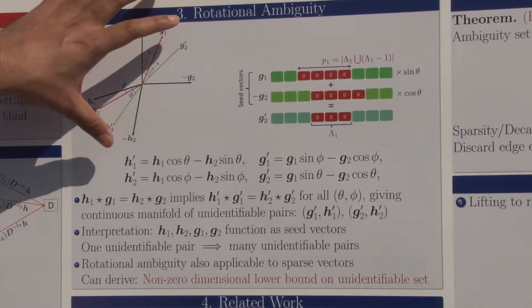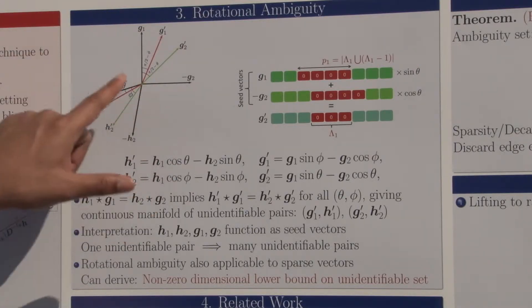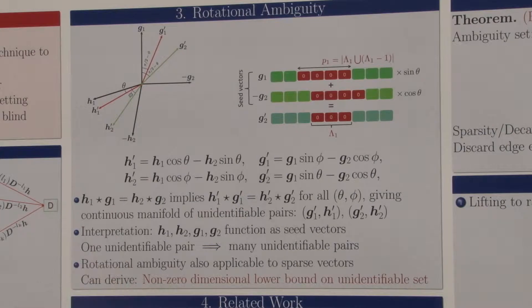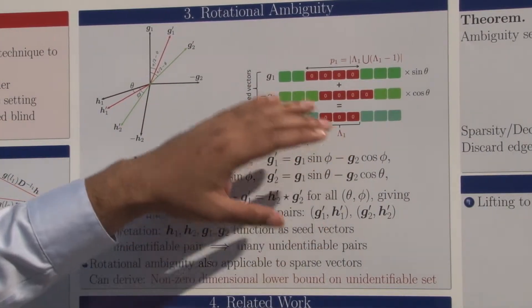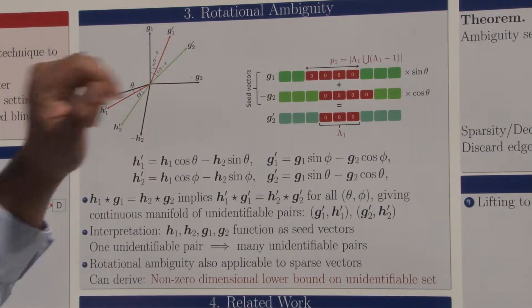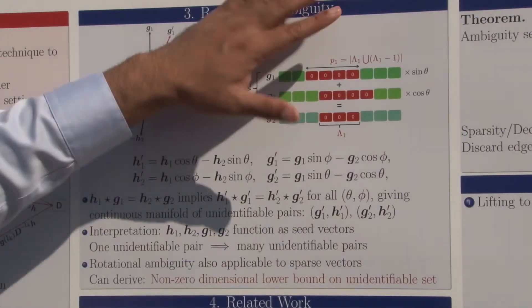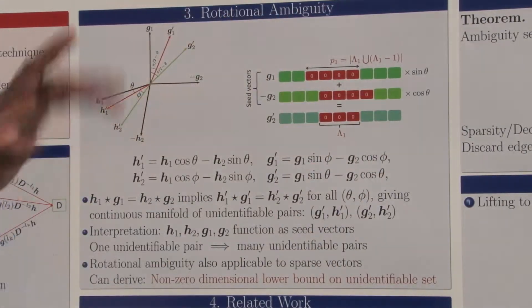Here the red vectors and green vectors give you the same convolved output. The unfortunate fact about this transformation is that it goes through for sparse vectors. So if you have sparsity constraints, you cannot resolve all of these rotational ambiguities just because you impose sparsity constraints, because even with sparsity constraints, this rotational transformation will hold.